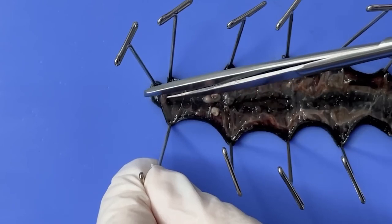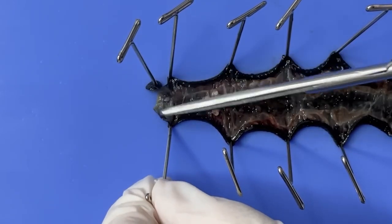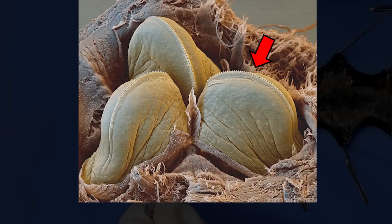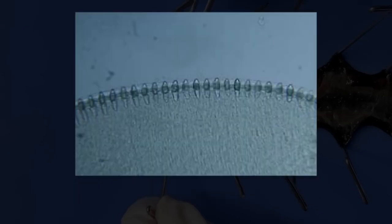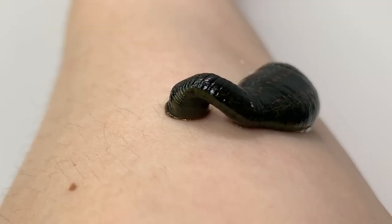When you cut the head part a bit more and open it up, you can see their jaws. The jaws have around 100 small teeth. And between these teeth, there are openings connected to salivary glands, which secrete saliva. So they can both inflict wounds on their prey and inject saliva into the prey's body.